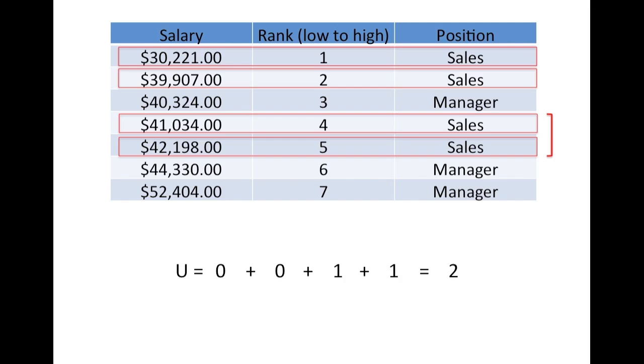Notice that I considered each salesperson one at a time and independent of the others, so that the manager ranked third here actually ends up being counted twice in my calculation of U. This isn't a mistake. The rule is to count how many data points from the other group are lower in rank than each data point in the lower summed ranked group.